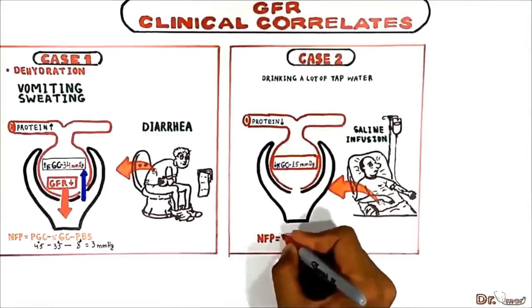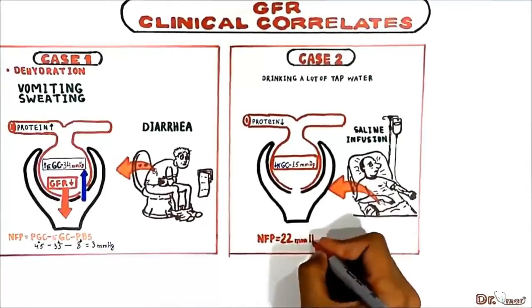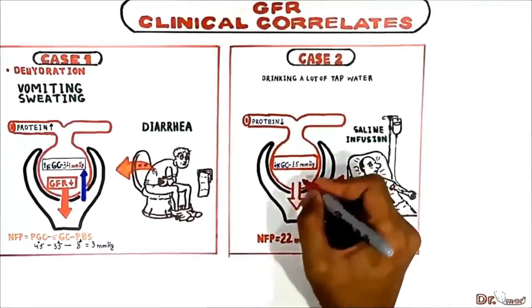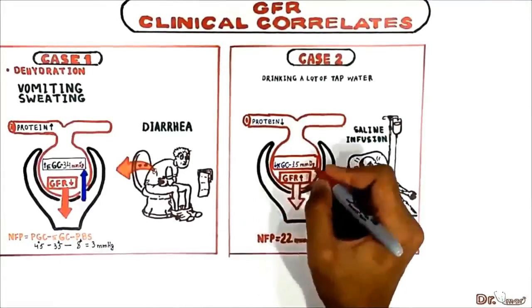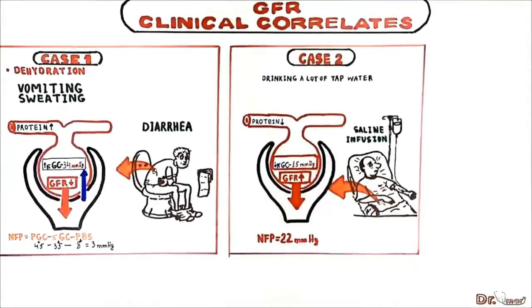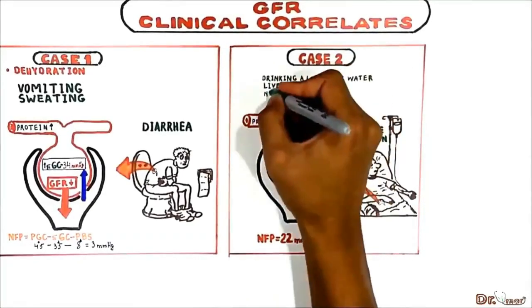Putting these values to our formula, we get 22 and this is a very high net filtration pressure which leads to increasing GFR. This happens in a patient with liver failure and nephrotic syndrome.